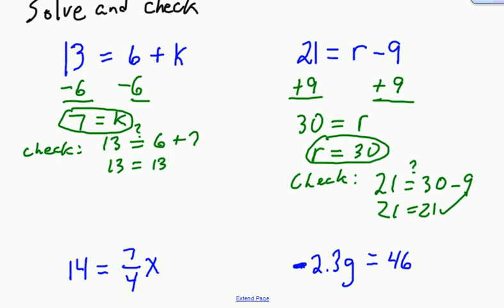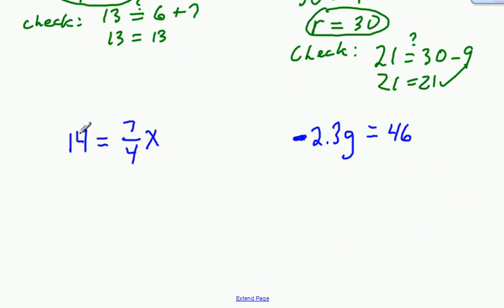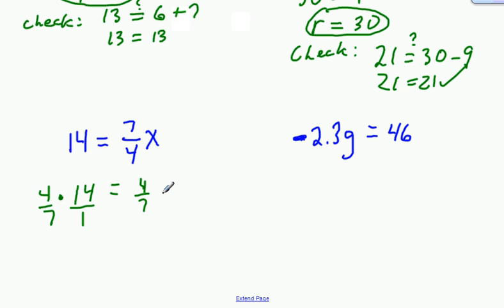If I have 14 equals 7 fourths times x, what I need to do is multiply each side by the reciprocal of 7 fourths, which would be 4 sevenths. If you want, you can throw that over 1. I'm going to multiply 4 sevenths by 7 fourths x, which gives us x on this side. The 7 and 14 cancel to make a 2, so that's x equals 8.